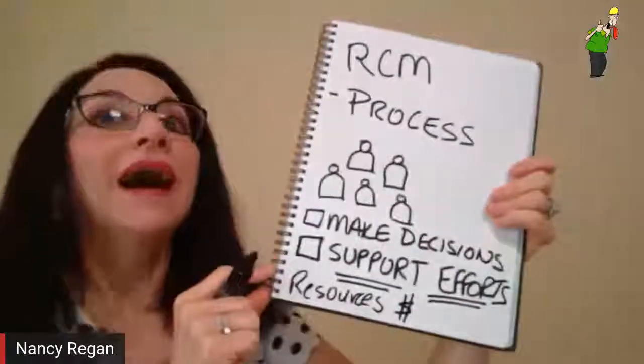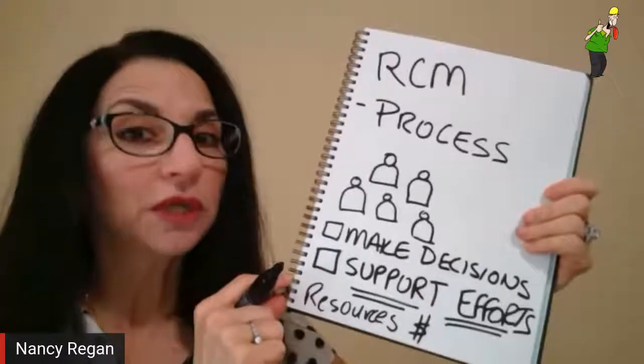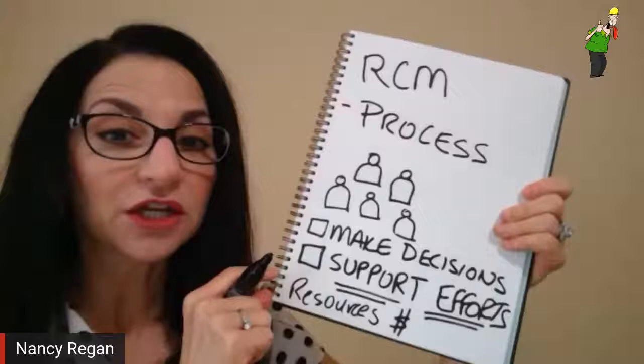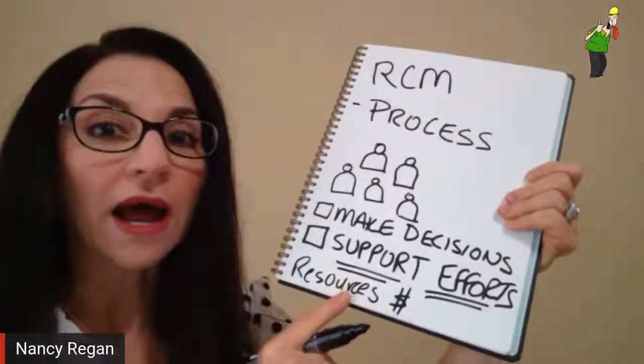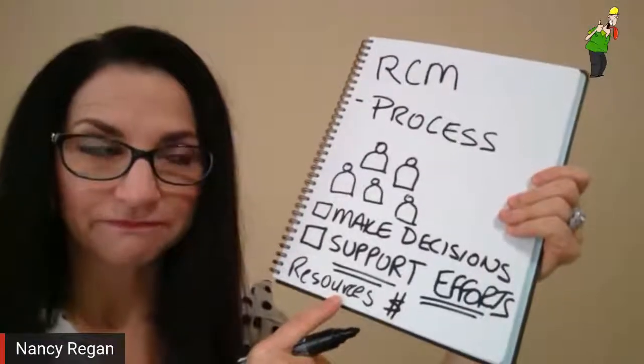We need people to support our efforts — whether it's reliability centered maintenance or any improvement effort. We need support, we need money, and we need other resources. I hear a lot that it's difficult to get management buy-in, to get management on our side, to get support for our improvement efforts. There's an art to getting that support.